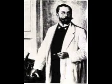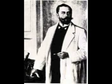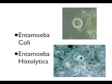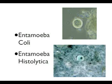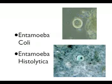This organism was later renamed Entamoeba histolytica by Fritz Schaudin, a German zoologist, in 1903. Schaudin was the first to differentiate between Entamoeba histolytica and its harmless counterpart, Entamoeba coli.